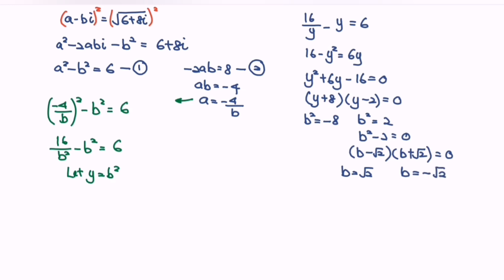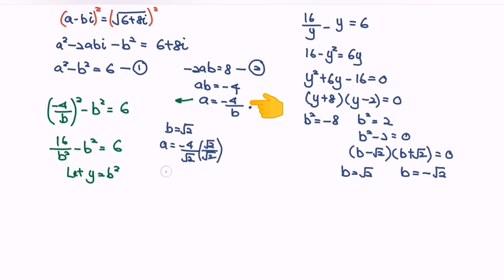Now substitute back to find a. If b equals square root of 2, then a equals negative 4 over square root of 2. Rationalizing the denominator by multiplying by the conjugate, we get a equals negative 4 times square root of 2 over 2, so a equals negative 2 square root of 2.